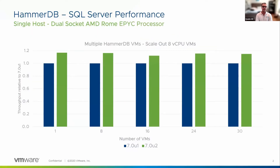The first performance data slide is about HammerDB. HammerDB is a workload generator used to test the performance of databases — in this case, SQL Server. The hardware was a single-host, dual-socket AMD Rome processor with 64 cores per socket, and four cores on each LLC. On the x-axis I have the number of VMs, scaled from one VM all the way to 30. On the y-axis I have throughput — transactions per minute — normalized with respect to 7.0U1. We're comparing 7.0U2 versus 7.0U1.